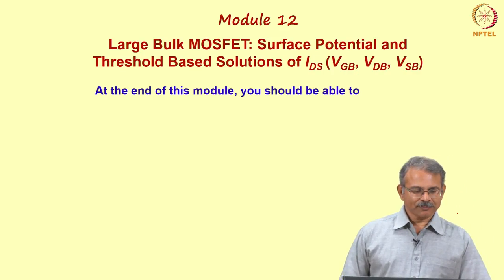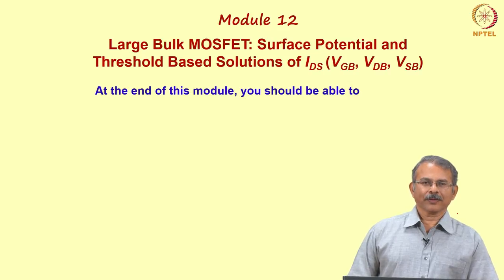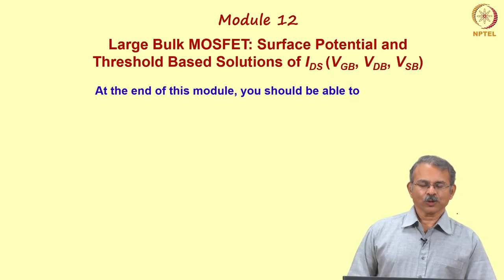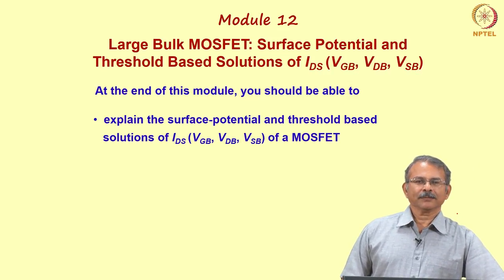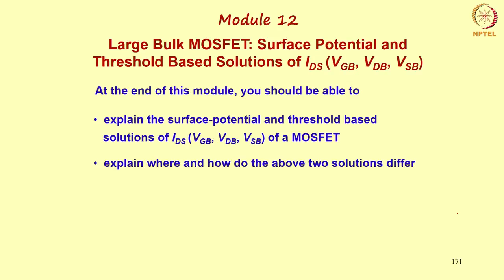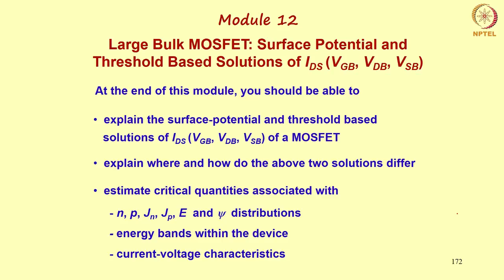Let us do a summary of this module. At the end of this module you should be able to explain the surface potential and threshold based solutions of the drain to source current as a function of gate bias, drain bias, and source bias with respect to bulk. Explain where and how the above solutions differ, and estimate critical quantities associated with carrier concentration n and p, current densities Jn and Jp, electric field and potential, quantities related to energy bands, and finally current-voltage characteristics.